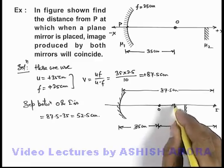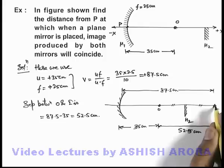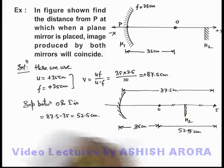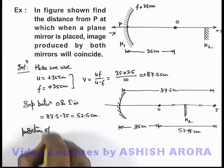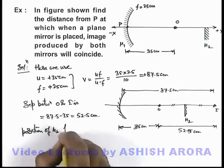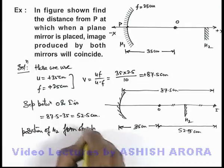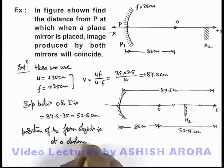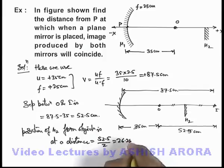Because we know that separation between object and plane mirror is always equal to the separation between image produced from the same mirror. So we can directly write position of M2 from object is at a distance—this distance is directly given as 52.5 divided by 2, which is 26.25 centimeters.